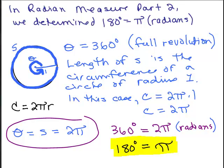In my video Radian Measure Part 2, we determined that 180 degrees equals π, or you could say π radians. And this is what we looked at. We took the definition of radian measure.